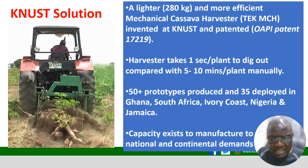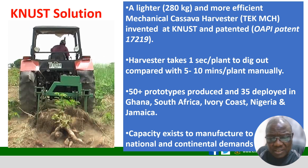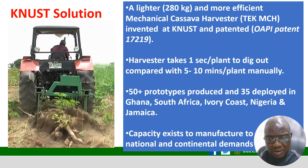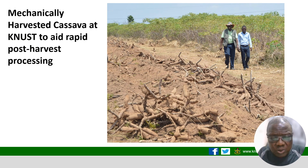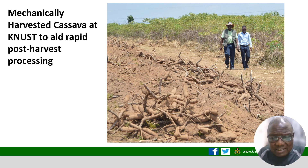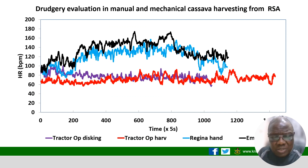The solution is a lighter mechanical cassava harvester developed at KNUST. It is light, can be pulled by most existing tractors, and takes one second to harvest a plant compared to five to ten minutes manually. We have produced about 60 prototypes and deployed about 35 in Ghana, South Africa, Morocco, Nigeria, and Jamaica. We have the capacity to produce to satisfy continental demand. This is a patented technology with several awards. When cassava is harvested mechanically, the field looks clean — like a spoon — and it is very easy during the dry season, making cassava available all year round.